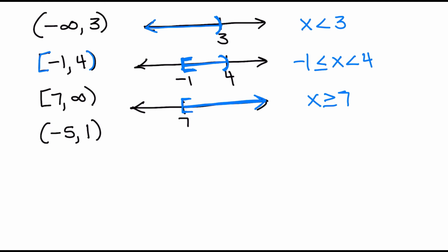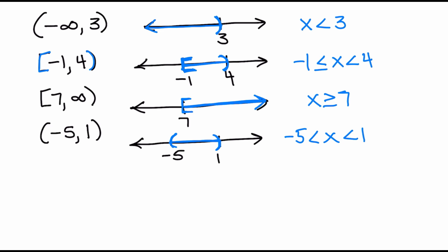The last one is parenthesis negative 5 comma 1. On a graph I create a number line with negative 5 and positive 1, use parentheses around both, and shade everything in between, because I want everything between negative 5 and 1. In inequality notation, I want numbers less than 1 and greater than negative 5. None of these have or equal to because there are no brackets.